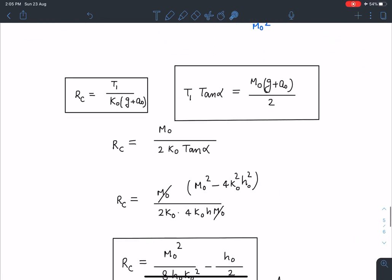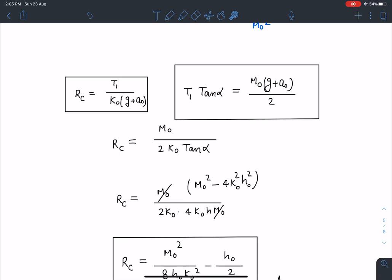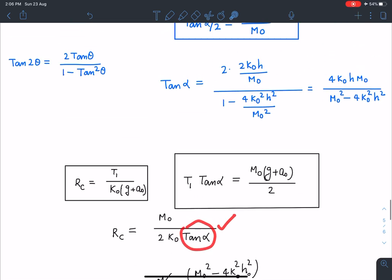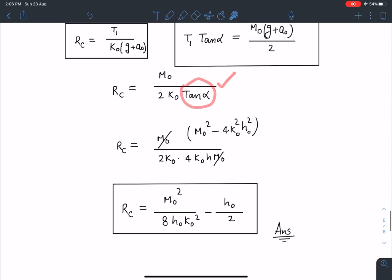Now I'll go back to the previous equations which I have derived and that was Rc is equal to T1 divided by k0 g plus a0 and T1 tan alpha was m0 g plus a0 by 2. So here I can see the value of T1 by g plus a0 and I can get from here T1 by g plus a0 which is going to be m0 by 2 tan alpha by k0. So this is my radius of curvature.